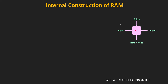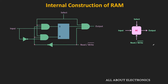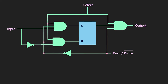The binary cell has three inputs and one output. The select pin enables the binary cell, and once selected, based on the read-write control signal, either a read or write operation will be performed. During the write operation, data from the data line is put into the binary cell. The storage part of the binary cell is modeled using the SR latch.